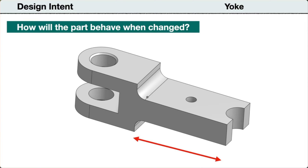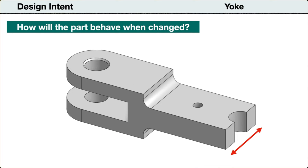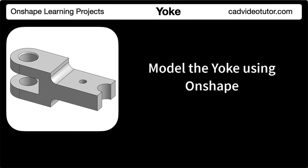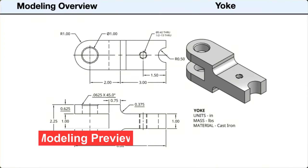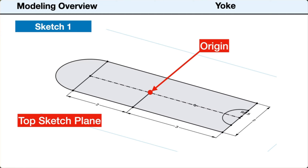We can change the length of the tongue end and the length of the yoke end, and change the overall width of the part, and the model will update without errors. Before we model the part in Onshape, let's preview the steps in the modeling process. First, from the drawing, we will identify the profile we will use for the base sketch. In this project, we will use the top view to create the base sketch. Sketch 1 will be placed on the top sketch plane. The origin will be placed at the center of the line that separates the tongue end from the yoke end. This is the base sketch.